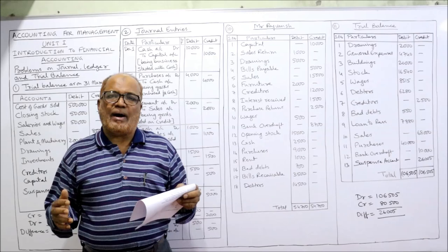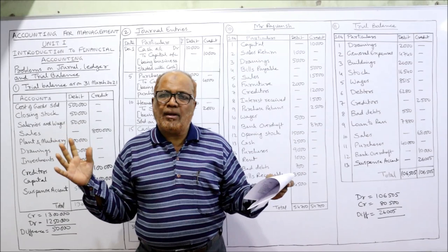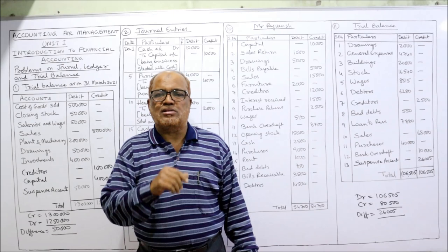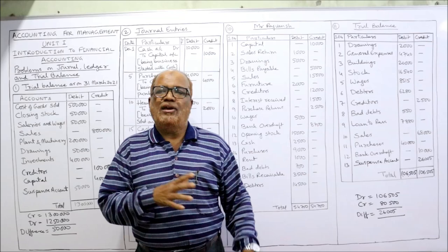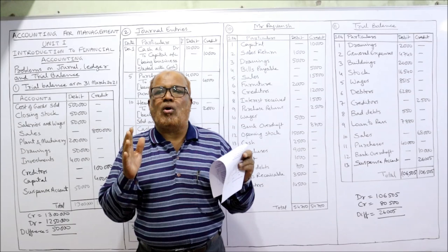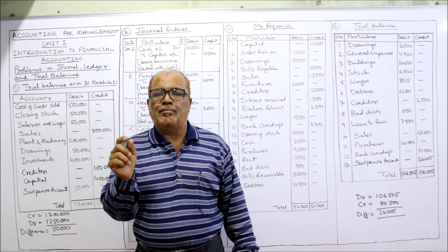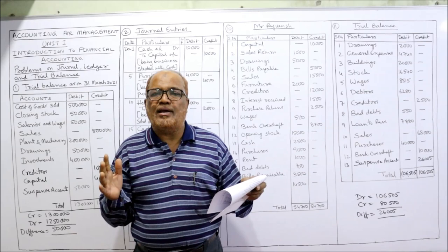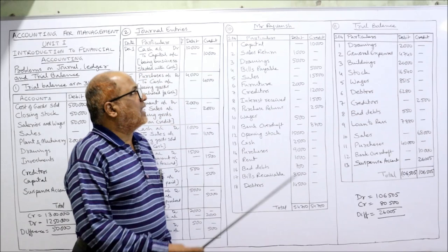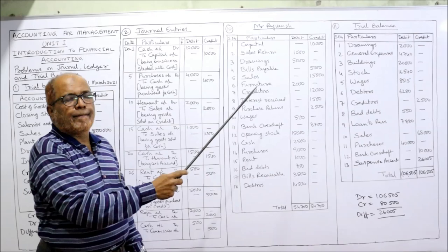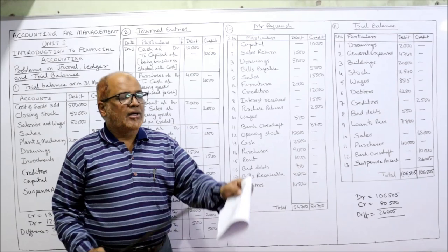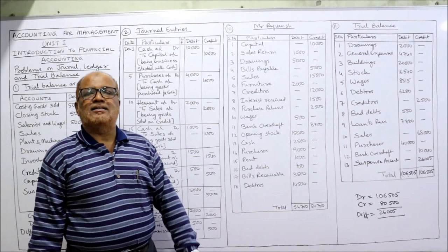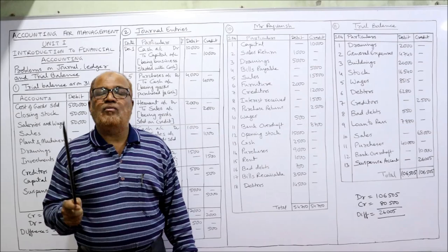Mr. Raj Vansh has provided all the ledger account balances and we have to make the trial balance. Remember the rules: debit all assets, expenses, and losses; credit all incomes, gains, or liabilities. Please keep a notebook, calculator, and pen beside you — note down every point so you can remember it. Trial balance for Mr. Raj Vansh: capital will show credit balance — capital 10,000 credit.